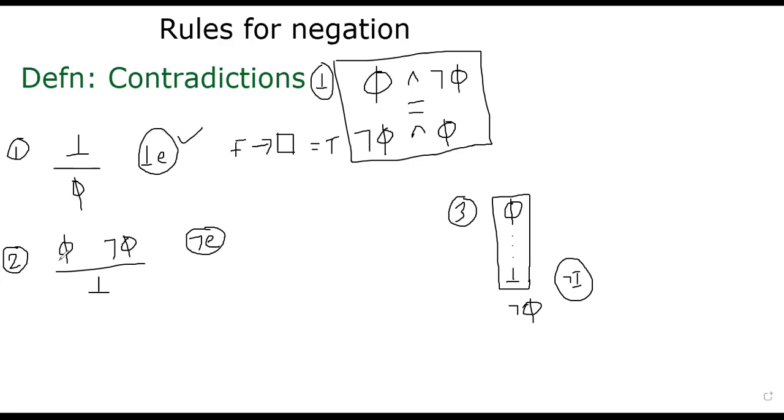The second rule is if you have already established pi and you're also able to establish not pi, that means there is contradiction. So, this rule is called not elimination. As you can see, not and e stands for elimination.